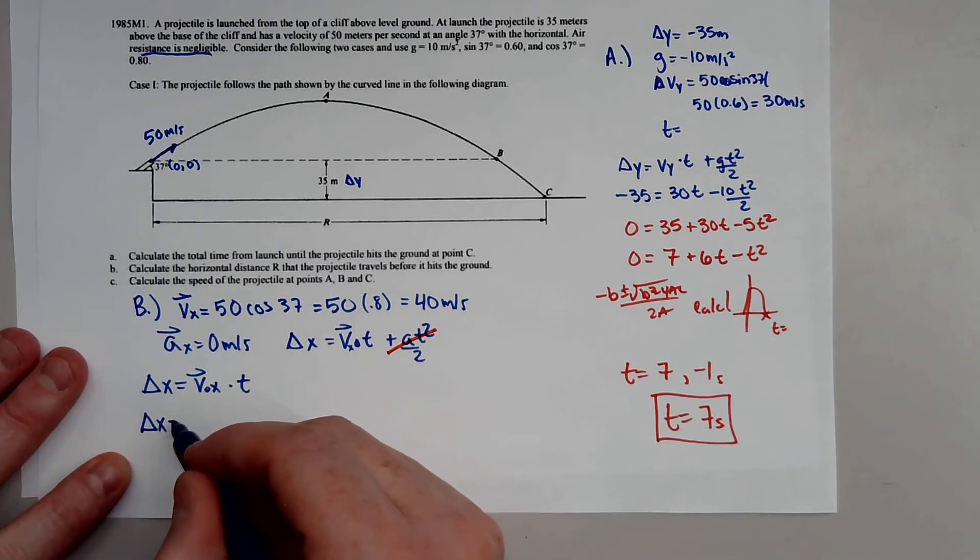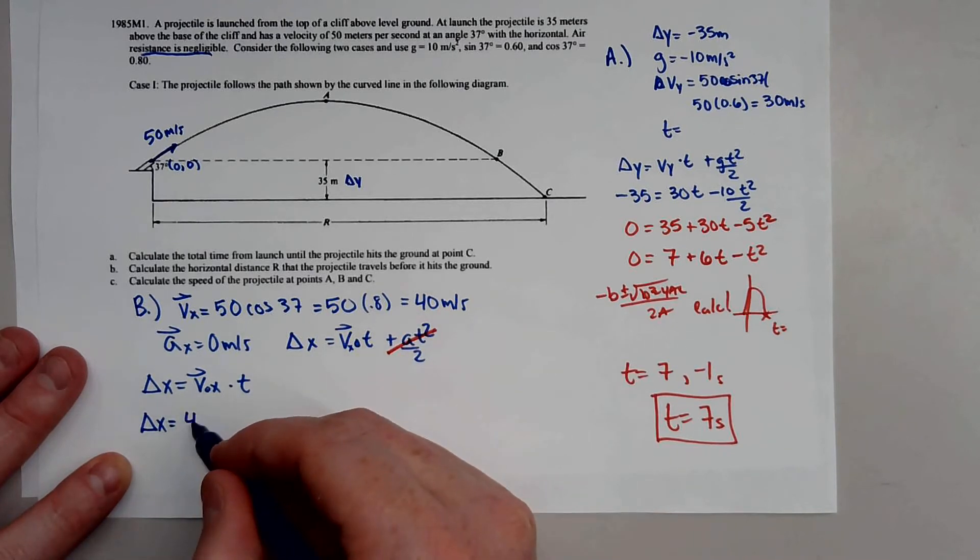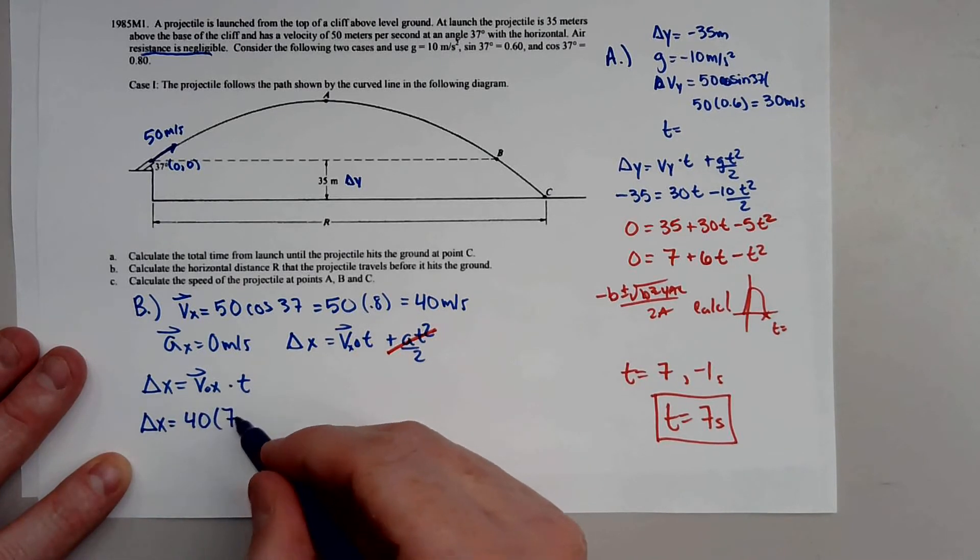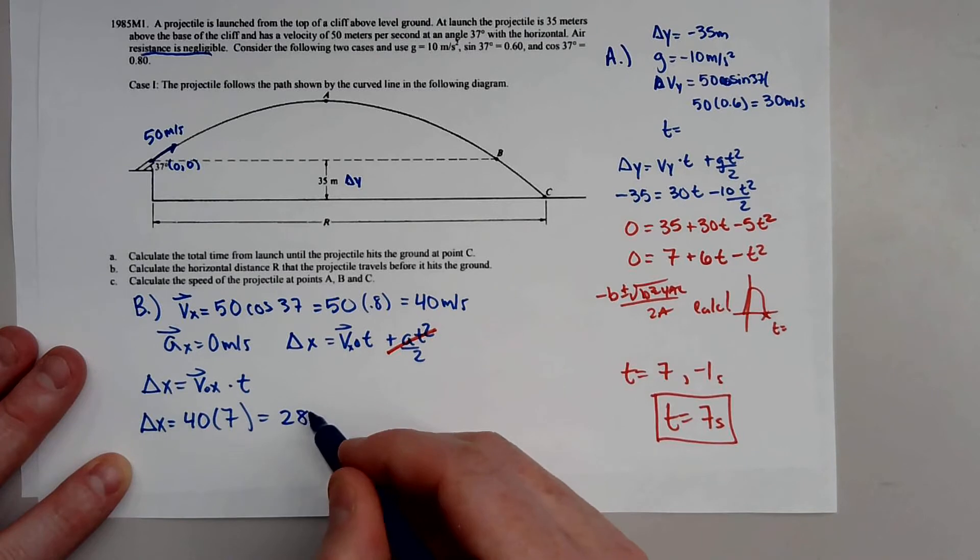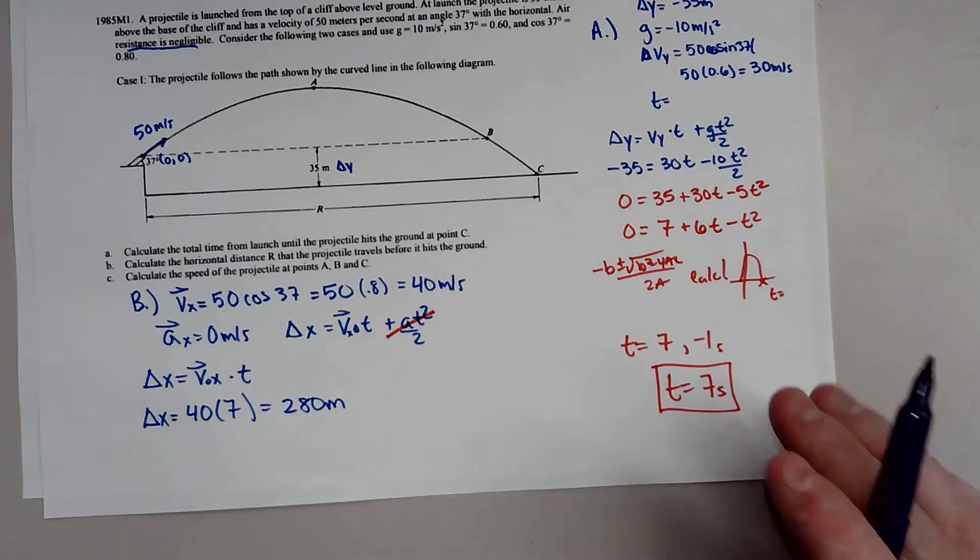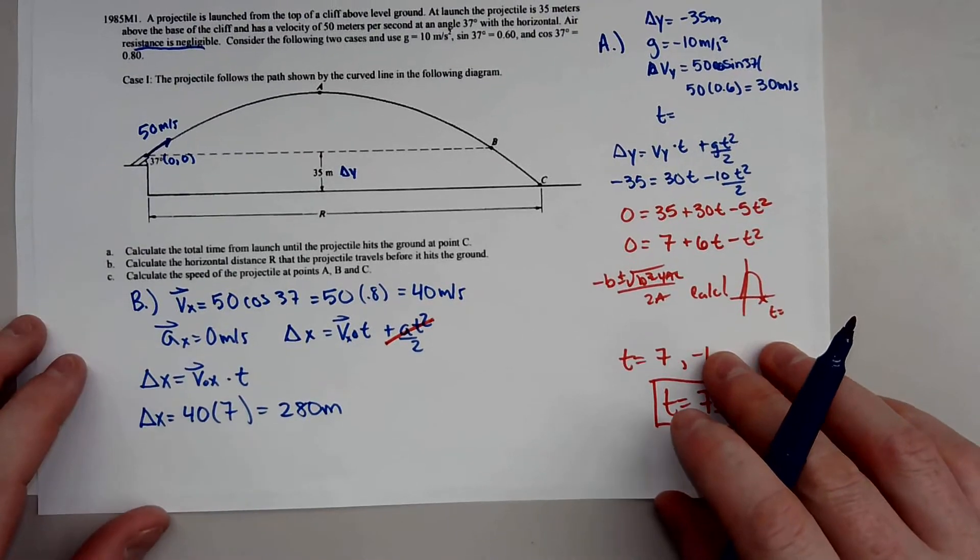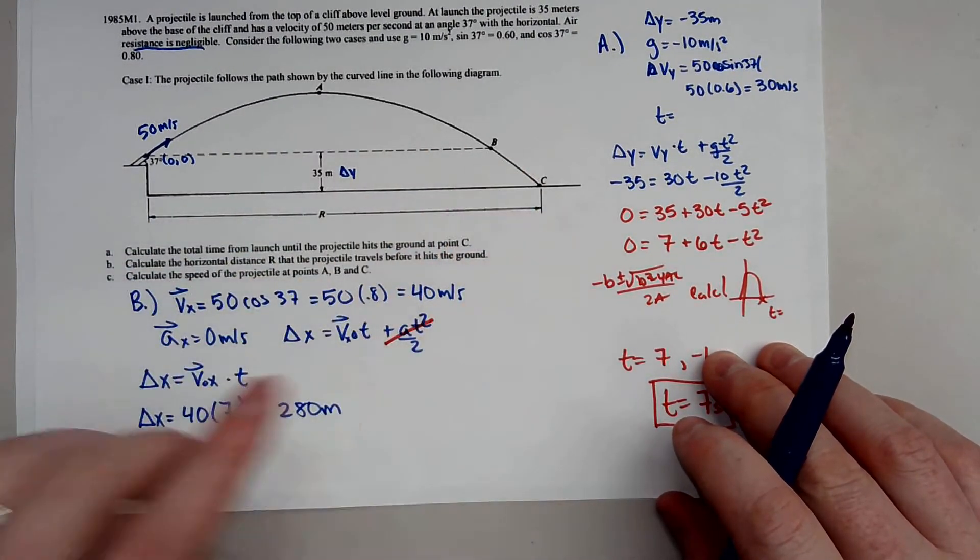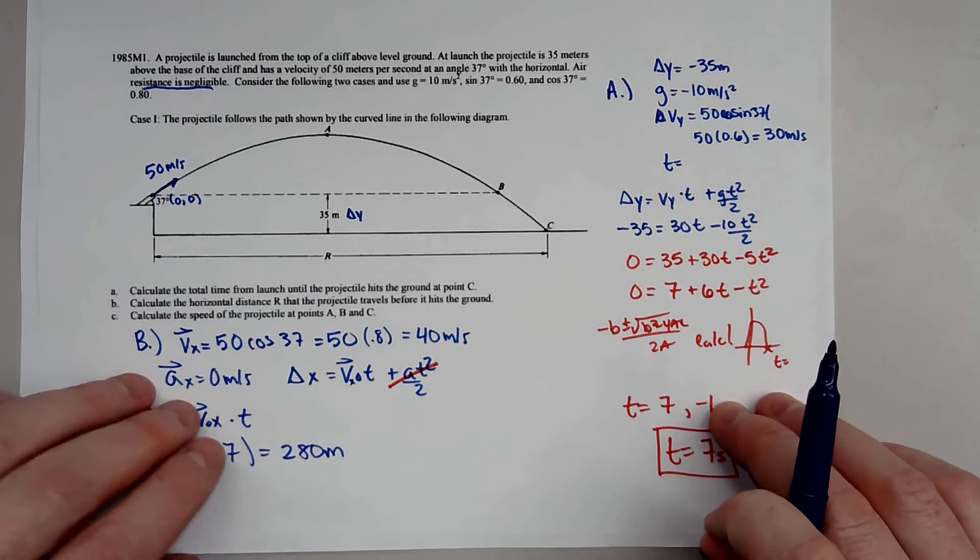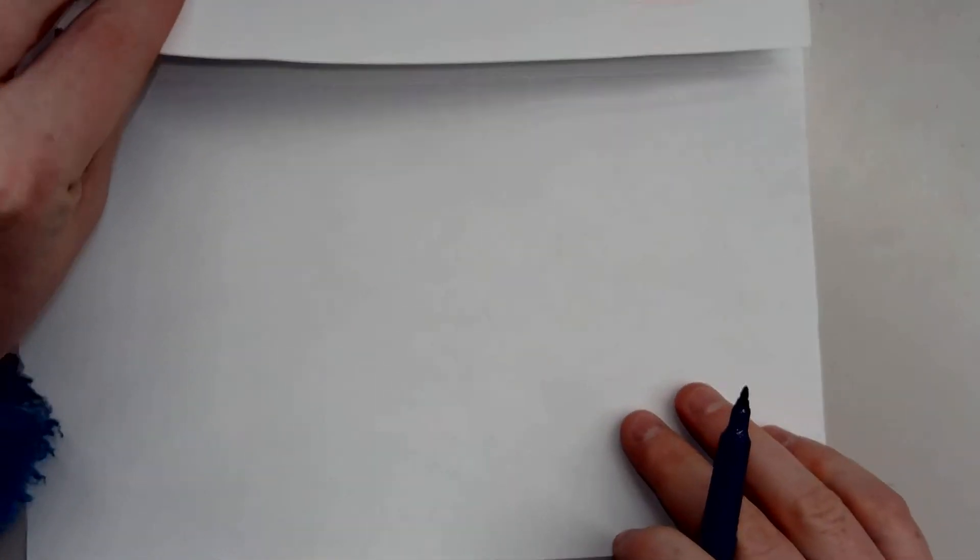So if we're looking for that displacement, we know the velocity in the x direction is 40, the time is 7, so that gives us 280 meters. Now, C is calculate the speed of the projectile at points A, B, and C. Now, this is going to be a little bit tricky. So this is C.